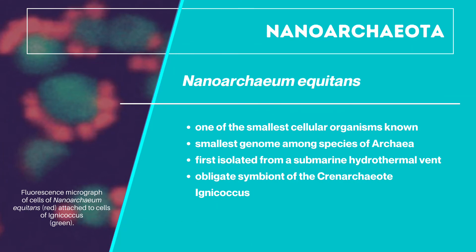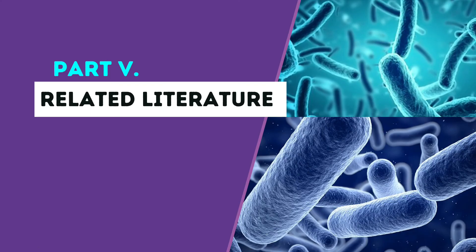Nanoarchaeum equitans is one of the smallest cellular organisms known, with the smallest genome among species of Archaea. They were first isolated from a submarine hydrothermal vent and are an obligate symbiont of the Crenarchaeote Ignicoccus. They cannot grow in pure culture and can only replicate when attached to the surface of their symbiont, growing to 10 or more cells per Ignicoccus cell and living an apparently parasitic lifestyle.